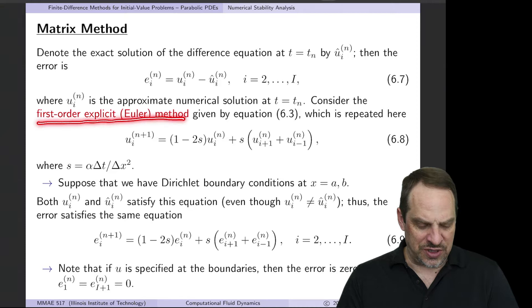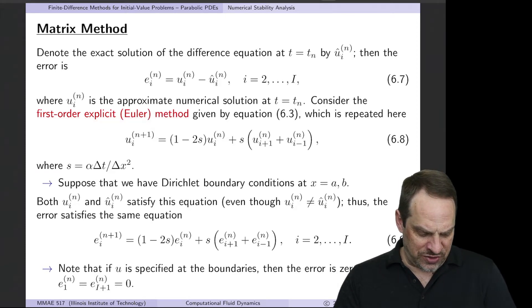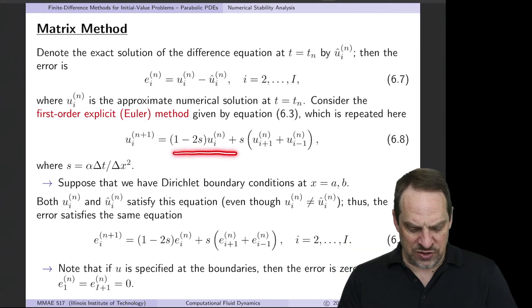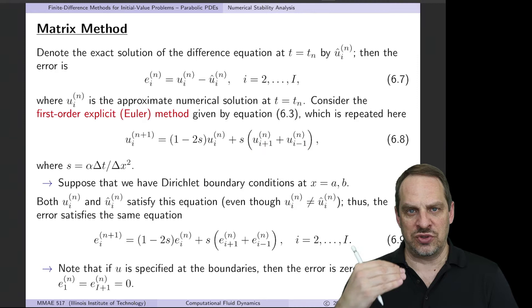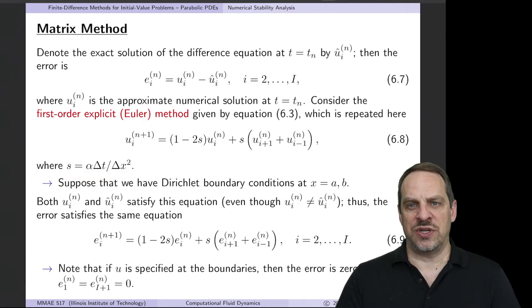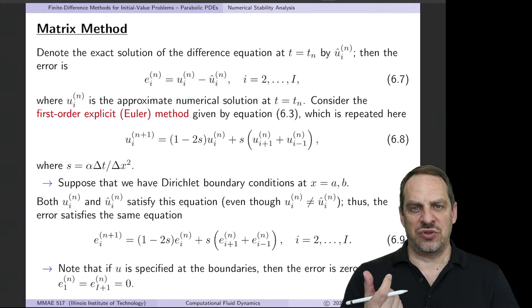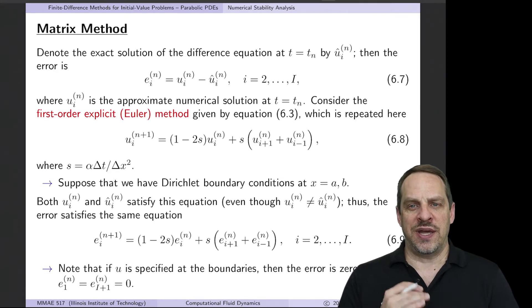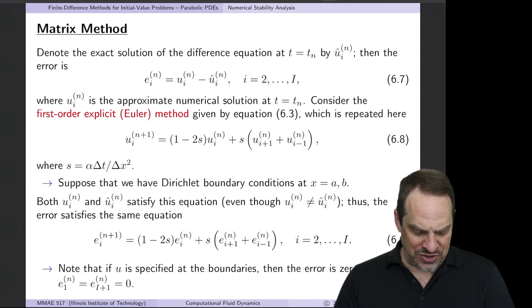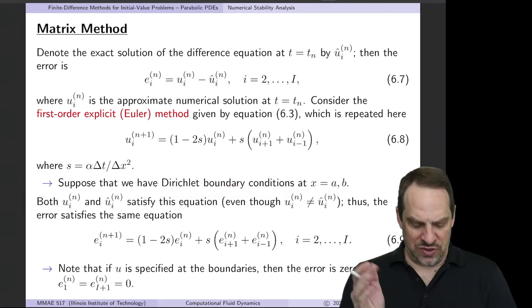Now for the first order explicit method that we looked at in the previous video, our difference equation looked like this. Remember we had an explicit expression for u_i^{n+1}, n plus 1 being the next time level at which we don't know the solution in terms of values of u all at n for which we do know the solution, the previous time step. So it was (1 - 2s) times u_i^n plus s times the quantity u_{i+1} plus u_{i-1}. And remember here that s is alpha delta t over delta x squared. Obviously delta x is the spatial grid size, delta t is the time step, and alpha is the diffusivity which is a physical parameter for the particular problem that we're looking at.